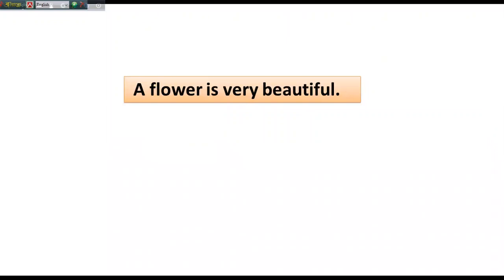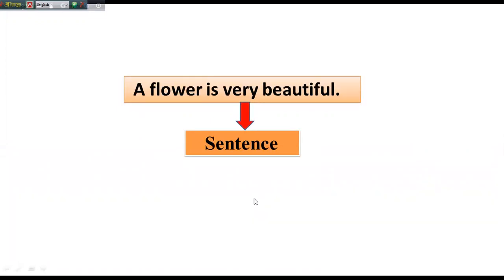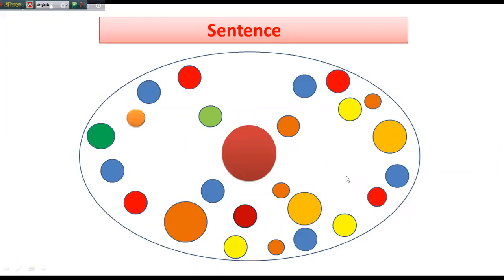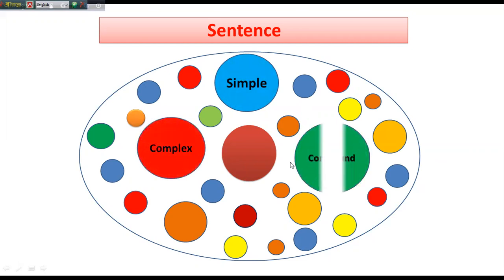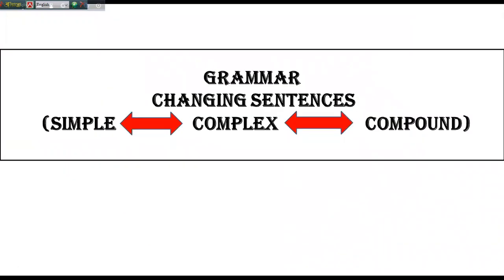So, what is our today's topic? What can you see here? Here is written: 'A flower is very beautiful.' This is a sentence. I think you have got the information about different types of sentences. According to its functions, a sentence is divided into five categories, but today I am talking about another division — according to its structure, its construction. A sentence is divided into three categories: the first one is simple, the second is complex, and the third is compound. So our today's topic is changing sentences from the grammar part — changing sentences among these three types: simple, complex, and compound.